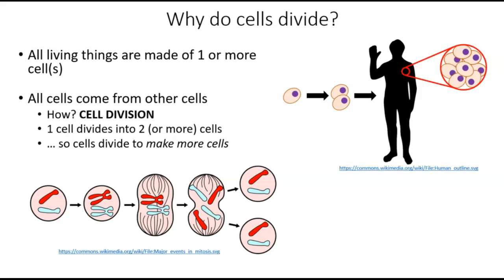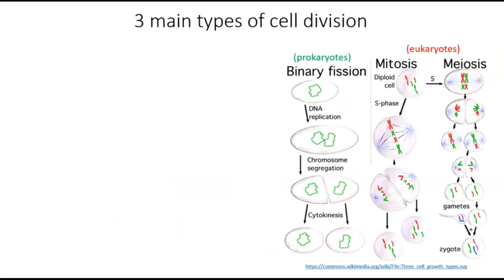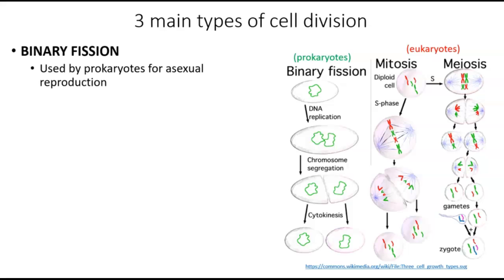There are several types of cell division, each performed by different types of organisms and for different purposes. Binary fission is a type of cell division used by prokaryotes, such as bacteria, for asexual reproduction. Because prokaryotic cells are small, simple cells with just one chromosome, this is a relatively simple process, and you do not need to know how it works for this class.